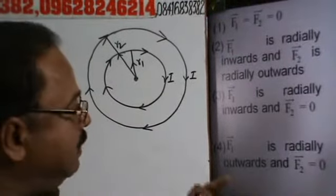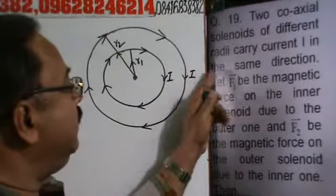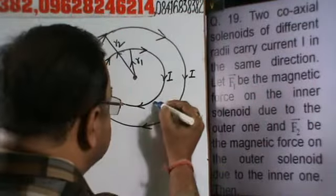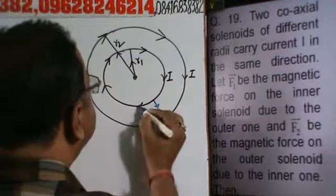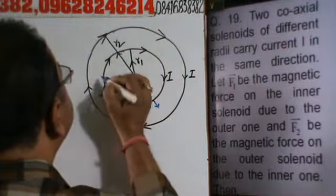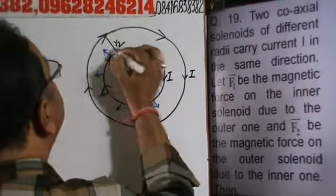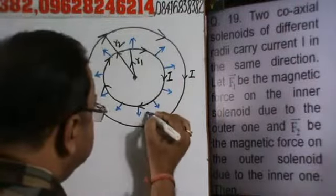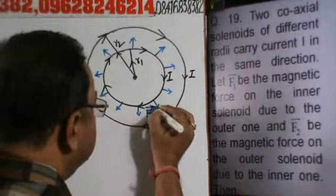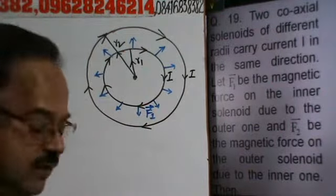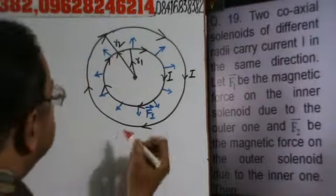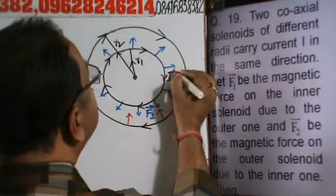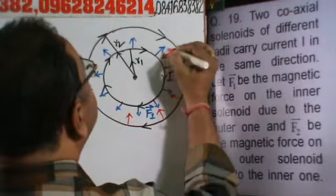Let F1 be the magnetic force on the inner solenoid due to the outer one. The outer conductor attracts the inner conductor, pulling it in the radially inward direction. Similarly, the inner conductor attracts the outer conductor, also in the radially inward direction. So vector F1 acts radially inward.